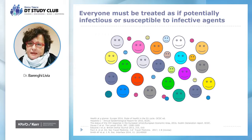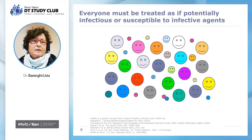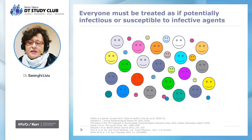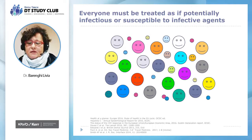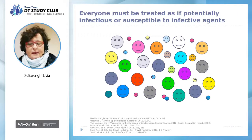Everyone must be treated as if potentially infectious or susceptible to infective agents. Two examples: even when the medical history is precise, we have to remember that hepatitis C infection is largely asymptomatic until later stages, and has increased by 26% in the European Union in the last 10 years. HIV-positive people are estimated at 0.2% of the population, and a high proportion do not know their status. Frequently, these people do not declare the infection to avoid discrimination before or during dental care.